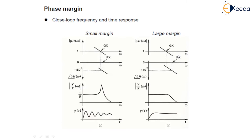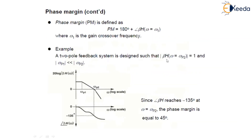We conclude that the greater the spacing between the gain crossover frequency and phase crossover frequency — with gain crossover always remaining below phase crossover — the more stable the feedback system. Alternatively, the phase of βH at the gain crossover frequency can serve as a stability meter: the smaller the angle of βH at the gain crossover frequency, the more stable the system. We now define phase margin as: Phase Margin = 180° + ∠βH(jω₁), where ω₁ is the gain crossover frequency.